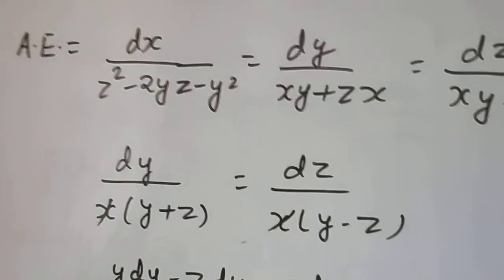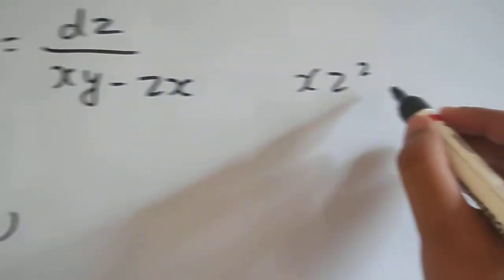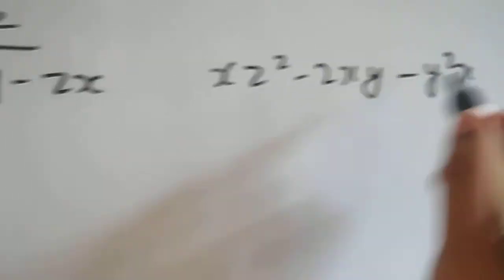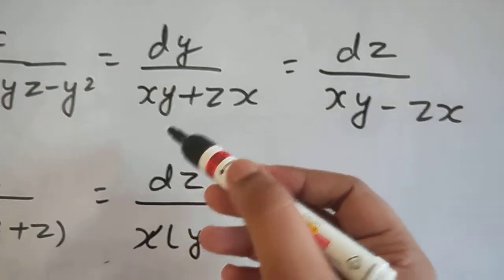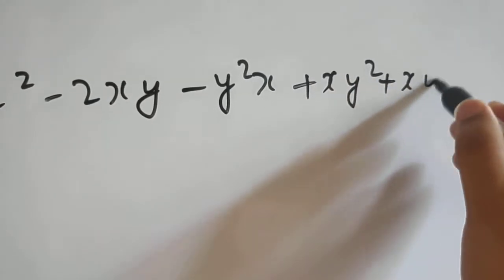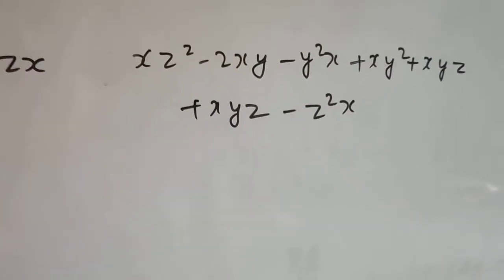So, if I multiply this by x. So, I will get x, z square minus 2, x, y, z minus y square x. Multiplying this by y, x, y square plus x, y, z. Multiplying this by z. So, x, y, z minus z square x.